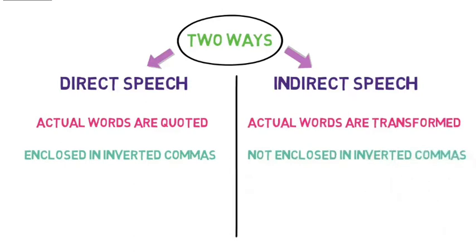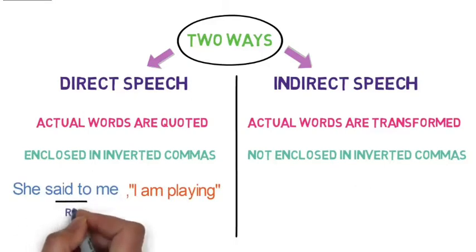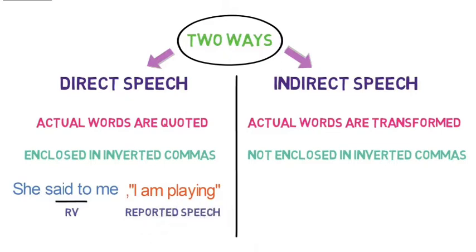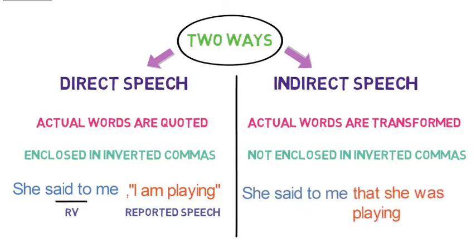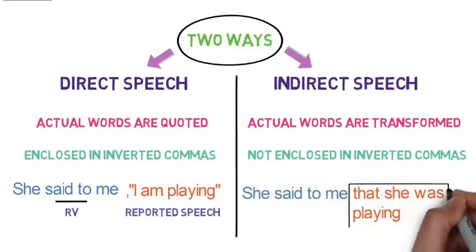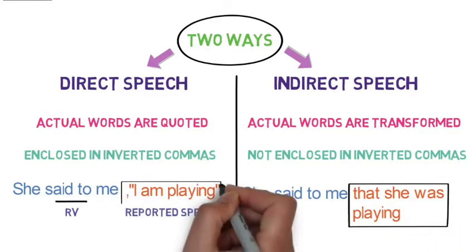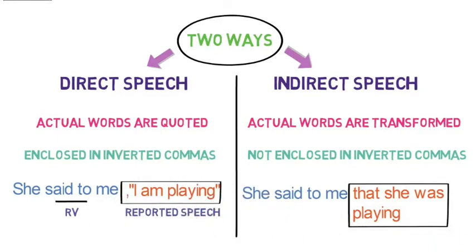They are read or written in simple language. Let's look at an example of direct speech: 'She said to me, I am playing.' Here, 'said to' is the reporting verb and 'I am playing' is the reported speech. In indirect speech, the sentence will be written like this: 'She said to me that she was playing.' The second sentence is the transformed version of the first sentence. Please check the previous video if you haven't already — links are provided in the description.